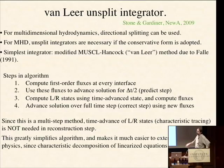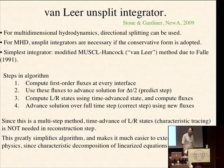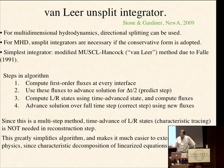This multi-step method is second-order accurate. It greatly simplifies the algorithm because you don't need the characteristic tracing step in the L/R states, making it easier to extend to multi-physics. You also don't need the characteristic decomposition of the linearized equations — the eigenvalues and eigenvectors — to do the reconstruction. It's a very simple algorithm that works pretty well.